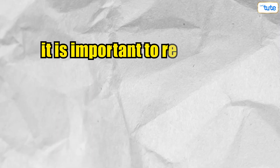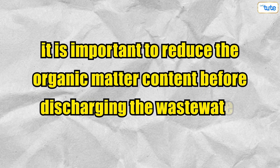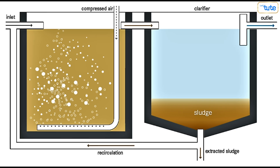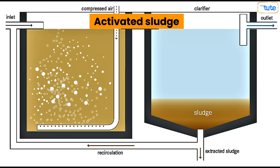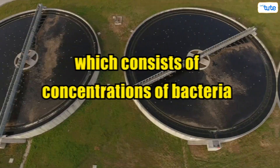Hence, it is important to reduce the organic matter content before discharging the wastewater. To further accelerate the breakdown of organic matter, the water from the aeration tank moves to another tank loaded with small solids called activated sludge, which consists of concentrations of bacteria.